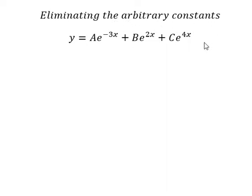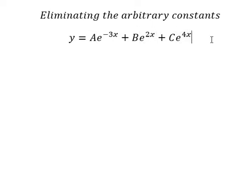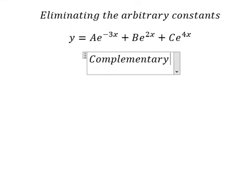So now I want to show you how to answer. So we have e to the power of negative 3x, e to the power of 2x, e to the power of 4x. In this one, we can use complementary solutions.